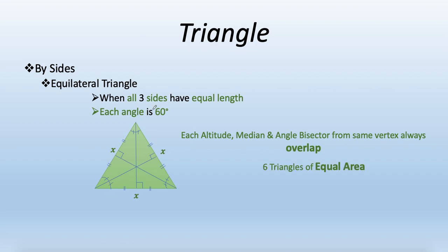Because of this overlapping property, the three medians divide an equilateral triangle into six equal smaller triangles. If you know the total area of the equilateral triangle, divide by six to find the area of one such smaller triangle. Conversely, multiply the area of one smaller triangle by six to get the total area. This property becomes important later when combining triangles with circles.